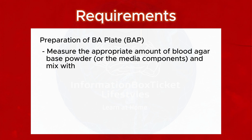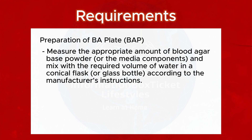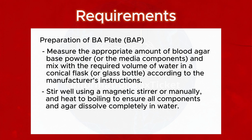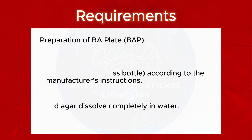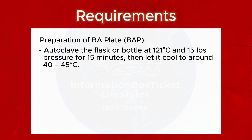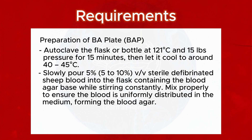Preparation of blood agar plate (BAP): Measure the appropriate amount of blood agar base powder, or the media components, and mix with the required volume of water in a conical flask or glass bottle according to the manufacturer's instructions. Stir well using a magnetic stirrer, or manually, and heat to boiling to ensure all components and agar dissolve completely. Autoclave the flask or bottle at 121°C and 15 lbs pressure for 15 minutes, then let it cool to around 40–45°C. Slowly pour 5–10% v/v sterile defibrinated sheep blood into the flask containing the blood agar base while stirring constantly.